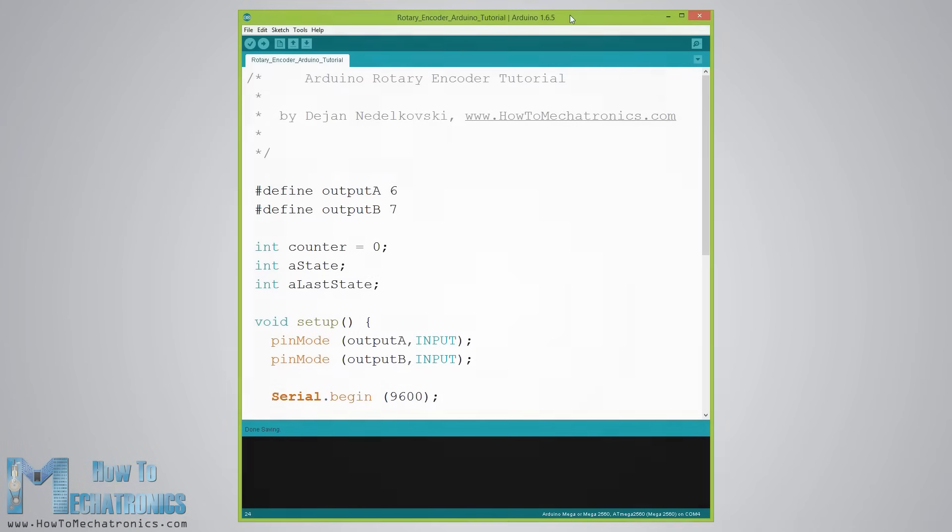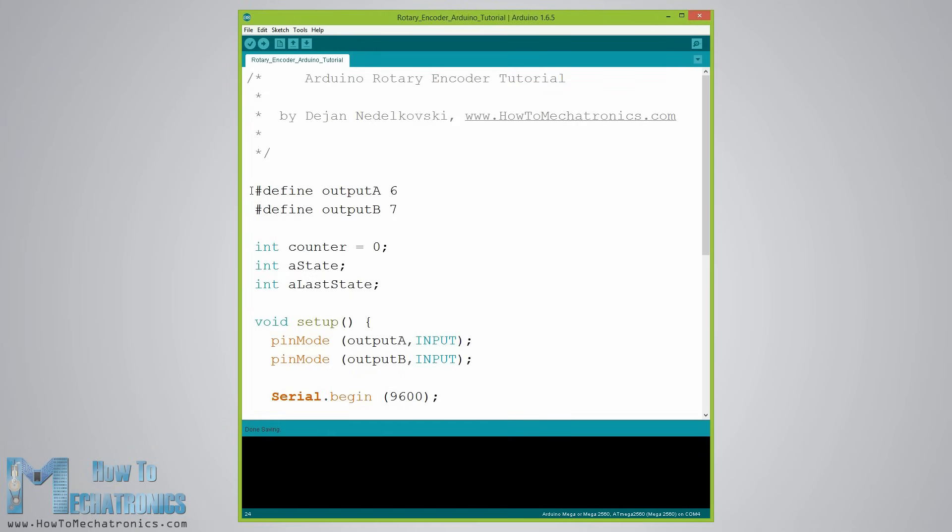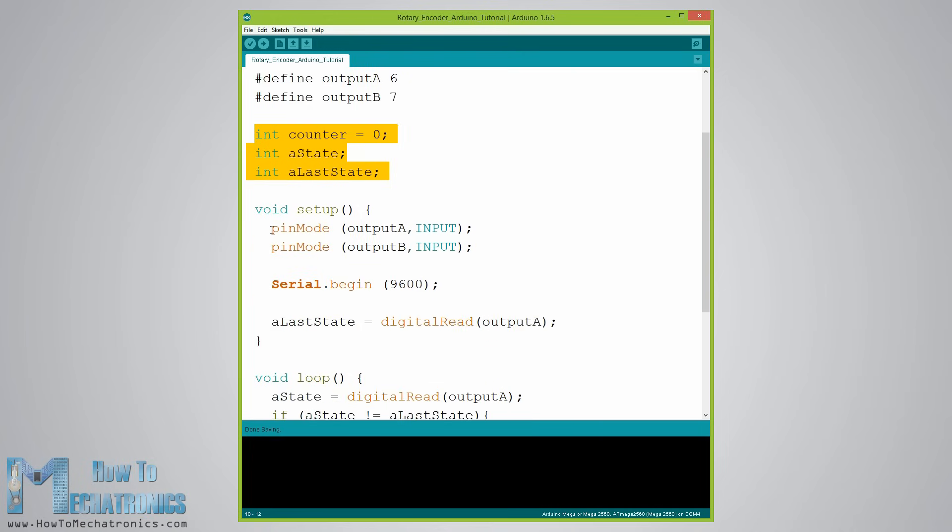Here's the Arduino code. First, we need to define the pins to which our encoder is connected and define some variables needed for the program. In the setup section, we need to define the two pins as inputs, start the serial communication for printing the results on the serial monitor, as well as read the initial value of the output A and put the value into the variable A last state.